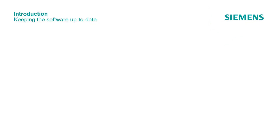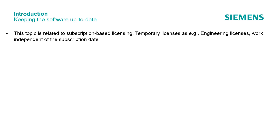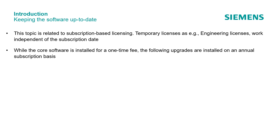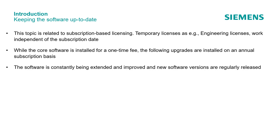It is recommended to keep the software up to date. This topic is related to subscription-based licensing. Temporary licenses such as engineering licenses work independent of the subscription date. While the core software is installed for a one-time fee, the following upgrades are installed on an annual subscription basis. The software is constantly being extended and improved and new software versions are regularly released. The latest version contains our most recent developments.